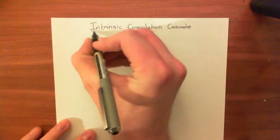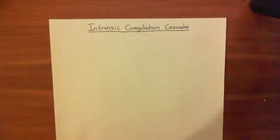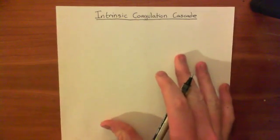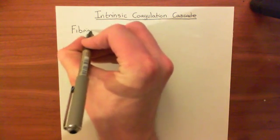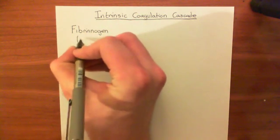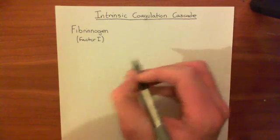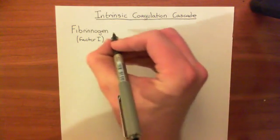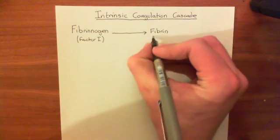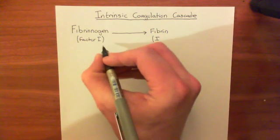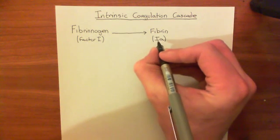Coagulation is the process of turning fibrinogen, which is a protein within the blood, also known as inactive factor 1 — written in Roman numerals when talking about clotting factors — into fibrin, or factor 1a. I'll drop writing 'factor' to keep things concise, so I'll write 1a to show it's the active factor 1.